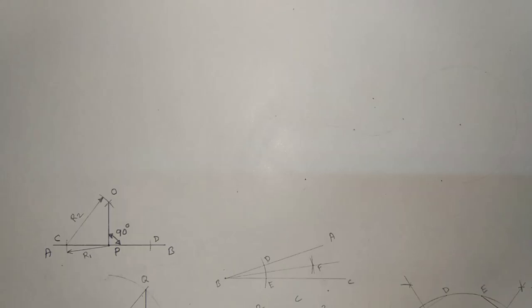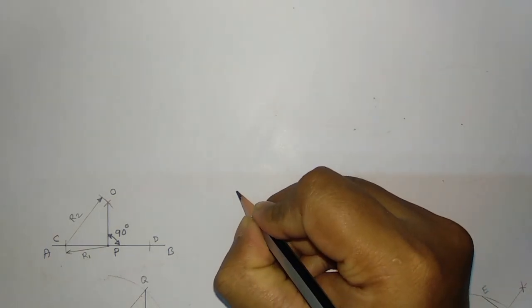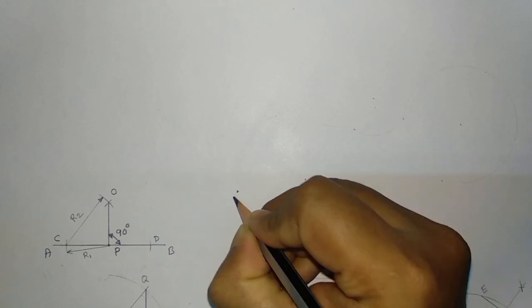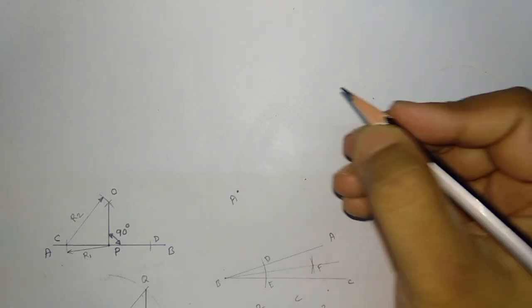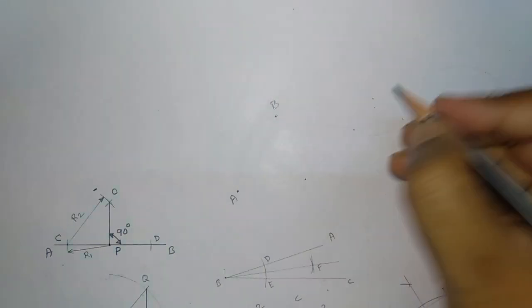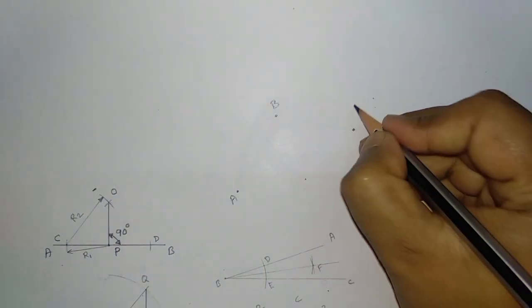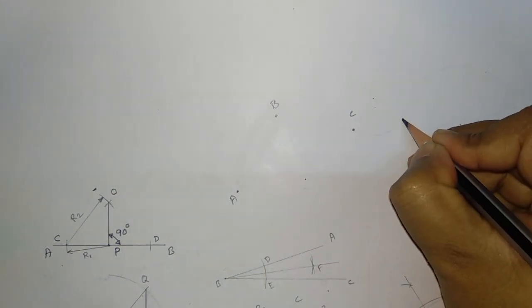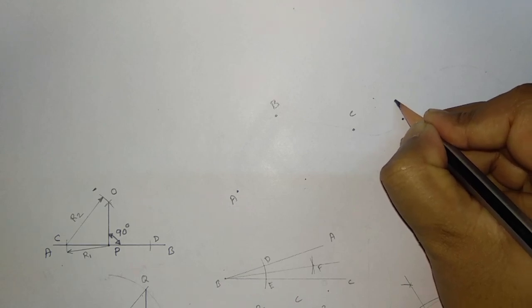In this video, I am going to draw a continuous curve if some points are given. Suppose these are the given points: point A, this is point B, this is somewhere point C, and this is point D, and here it is point E.